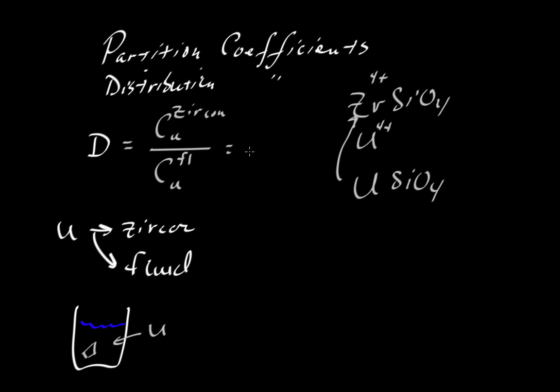We do experiments to figure this out. When we allow the zircon and water to equilibrate with respect to uranium, maybe the zircon has 627 parts per million uranium, and the concentration in the fluid is 967 ppm. These values are from a paper by Ayers et al. Taking that ratio, the D value is about 0.68.